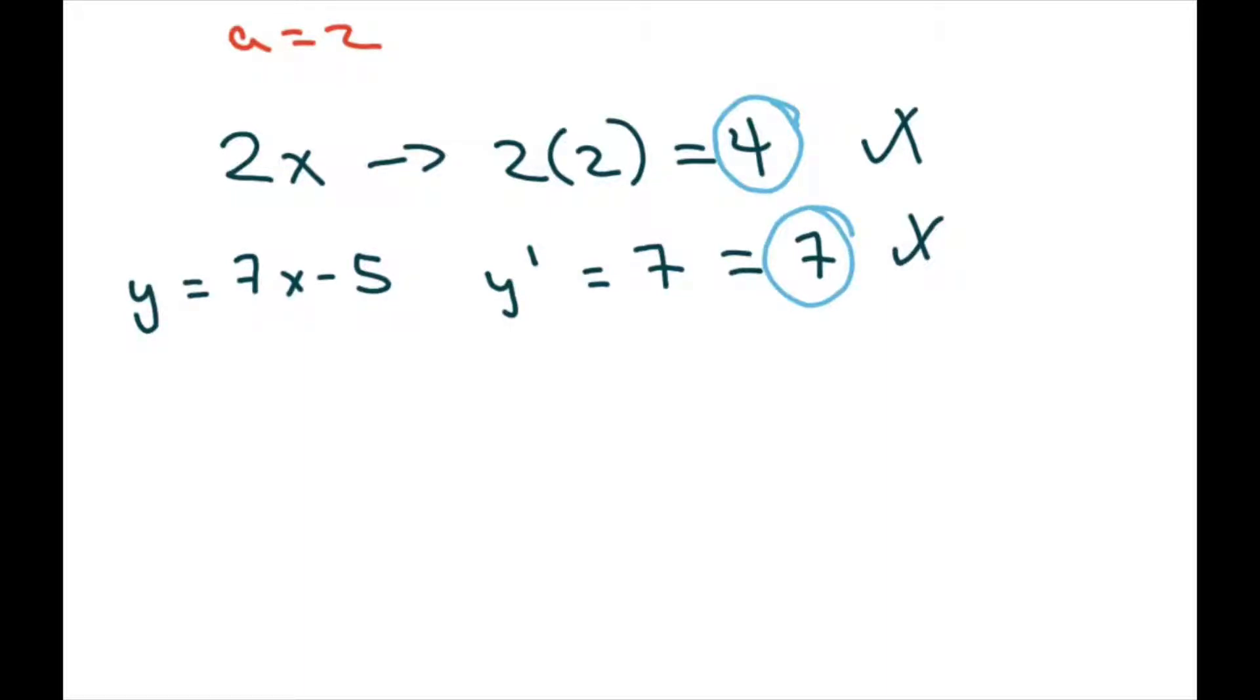If the slope has the same sign, because both of these are positive, that means the function cannot have a local minimum or maximum at that point. So 3 is false. So the only answer that is right is 1.